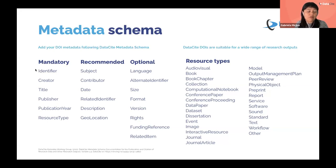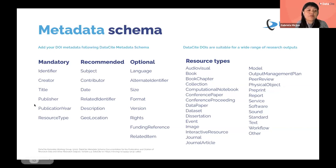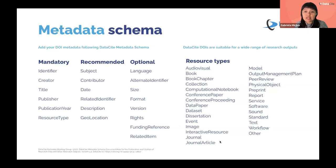The mandatory attributes are the identifier itself, the creators of that item or output, the title of the item, the publisher — like the repository that hosts that information — the publication year, and the resource type. Datasets are the most widely used resource type in our registry, but we support a wide range of outputs and resources: beyond datasets, preprints, software, dissertations, images, and more.